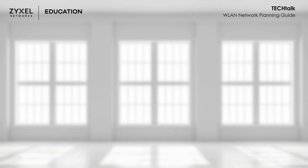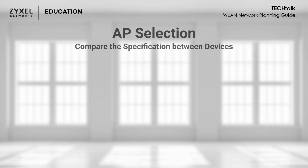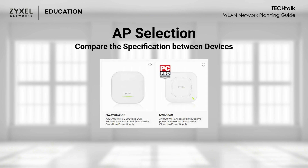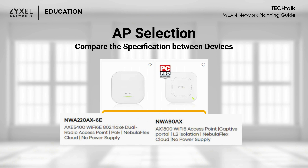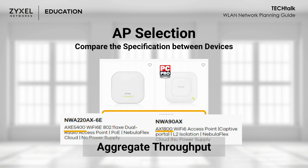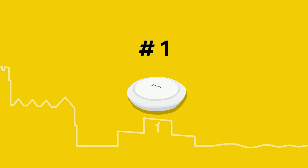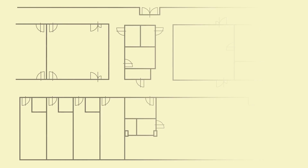Once you have a clear understanding of your requirements, it's time to select the right access point for your Wi-Fi network. The first and most important consideration is the transmission rate of each product. On shopping websites, you will come across descriptions like AX5400 or AX1800, which represent the aggregate throughput of each AP. The higher the number, the better performance the product can provide. When you require higher quality network performance, choose a product with a higher aggregate throughput.